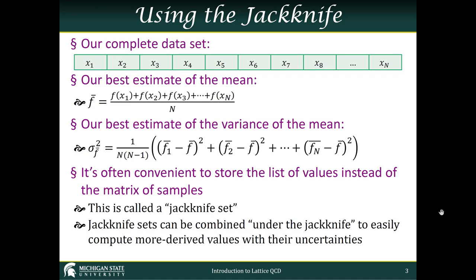For example, if you had one mass and a second mass and you wanted to know their ratio, you could compute that ratio under the jackknife, and it will automatically take into account all of the correlations in that data and give you the correct ratio as well as the correct variance of the mean. So that's the basics of the jackknife procedure, which is a very important tool in Lattice QCD.